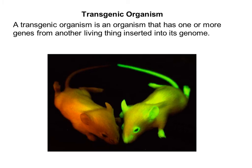Another vocab term is a transgenic organism. Trans means across — so across the genome. This organism has one or more genes from another living thing inserted into its genome. For example, in this picture, these mice have a gene inserted from a jellyfish that allows them to glow under blacklight.